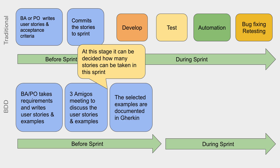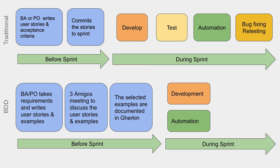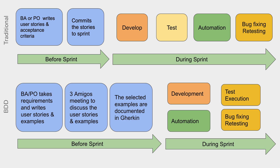At this stage, it can also be decided how many user stories can be taken in the Sprint based on the duration and the amount of work. All team members and representatives can collectively decide how much work or how many user stories can be taken in the Sprint. Then the Sprint starts, where automation test creation and development activities go hand in hand at the same time. Finally, we have the test execution phase — if there are any defects or bugs, they are fixed and retesting is done.